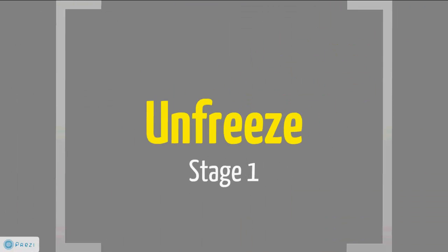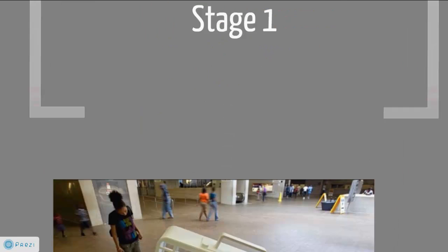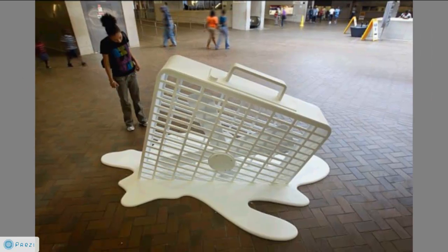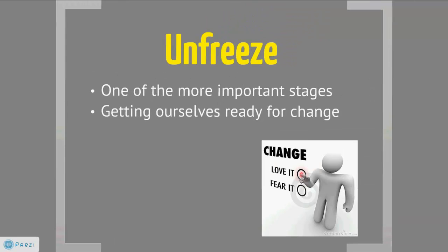To begin with, we'll start with the first stage: Unfreeze. Unfreeze is about getting people to see that change is necessary and moving people away from their comfort zone — basically getting us ready for change. The more it seems necessary, the more urgent it will appear, and thus will cause people to be more motivated to make the change.